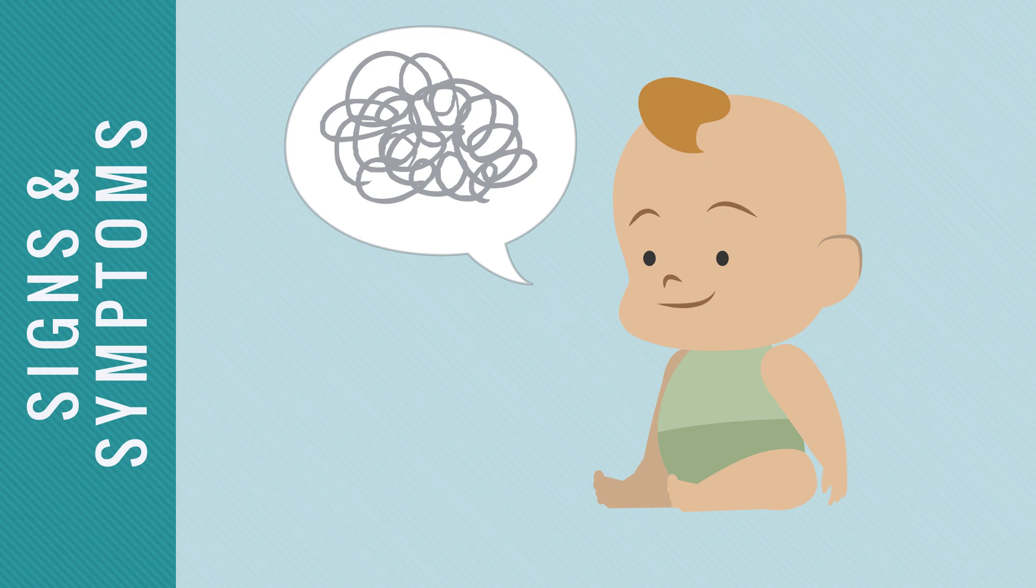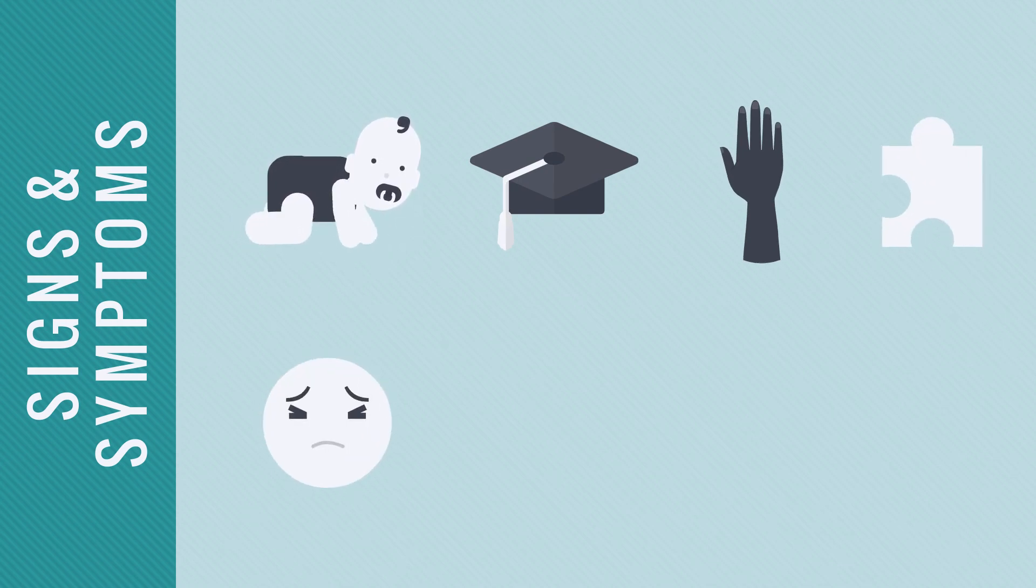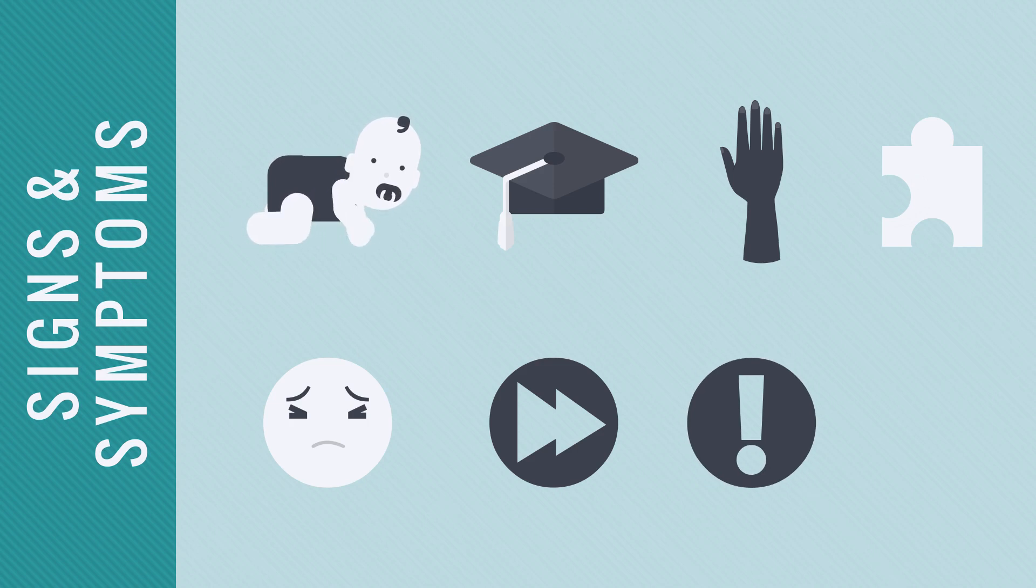Children with this condition may also exhibit the following signs and symptoms: developmental delays such as sitting, walking, and talking; learning disabilities; sensory disorders; autistic behaviors; anxiety; hyperactivity; ADD; and ADHD.